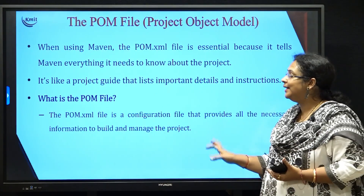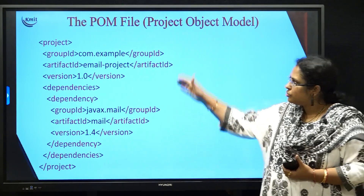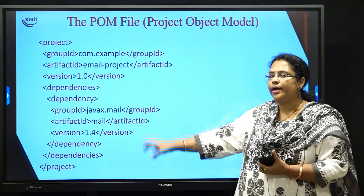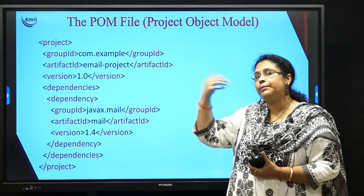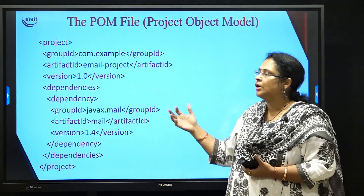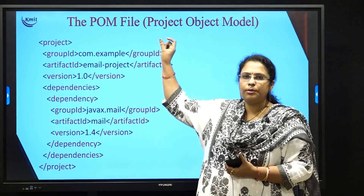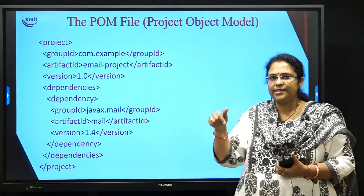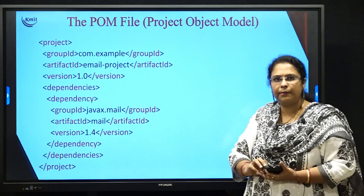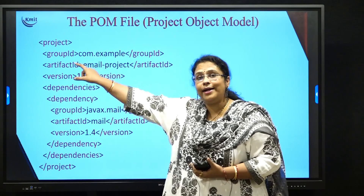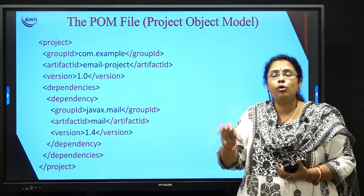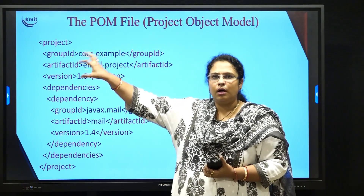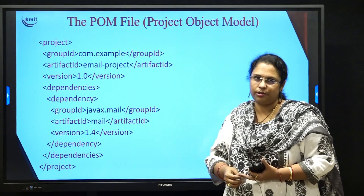Let us have a look at the template of this pom.xml file. These are the tags that you can see in your pom.xml file — this is how your pom.xml file for every Java project you are developing will actually look like. Starting with the first one which is the project tag — it is the main tag which tells you that inside this particular tag you have all the information related to the project. The next one is the group ID, which talks about who is the owner of this particular project — in this case, example.com is the owner.